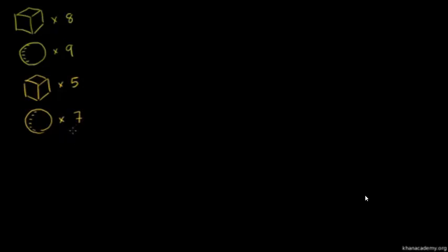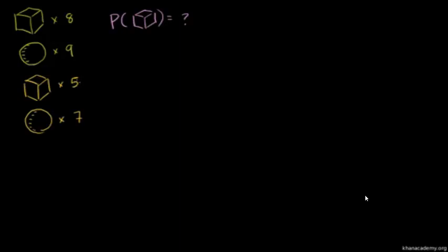I'm going to stick them all in this bag, shake it, then pour it out and look at the first object that falls out. We want to think about the probabilities of getting different types of objects. There are 8 plus 9 is 17, plus 5 is 22, plus 7 is 29. So there are 29 objects in the bag.